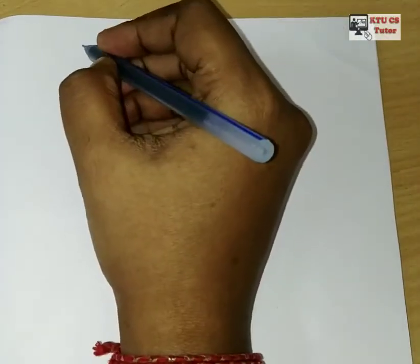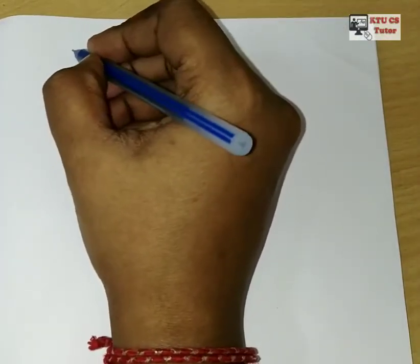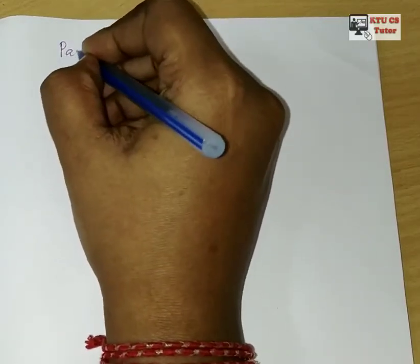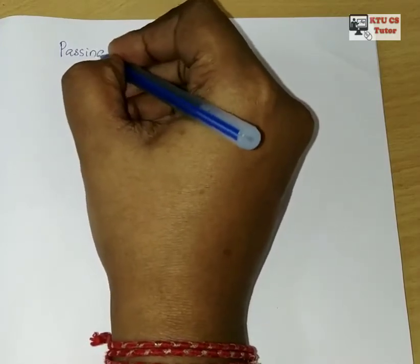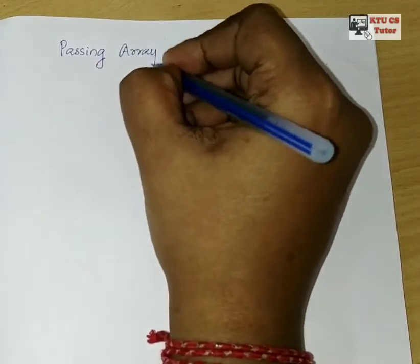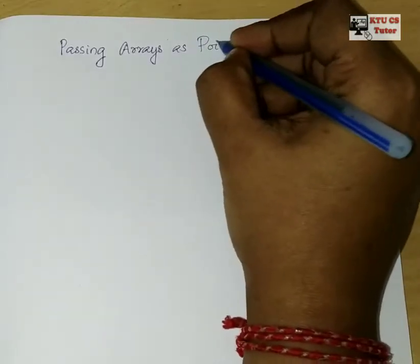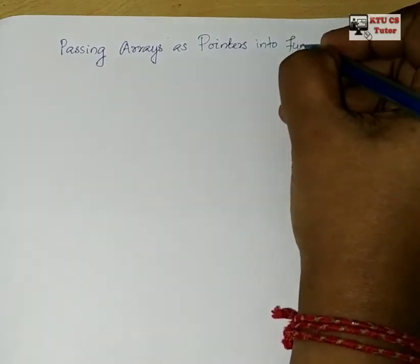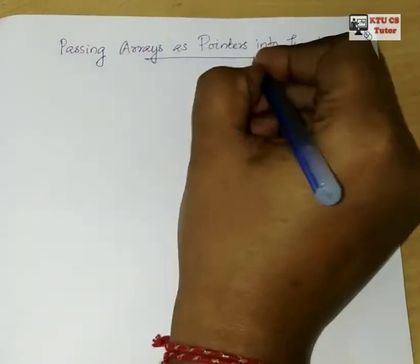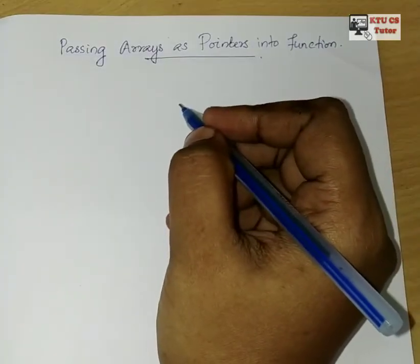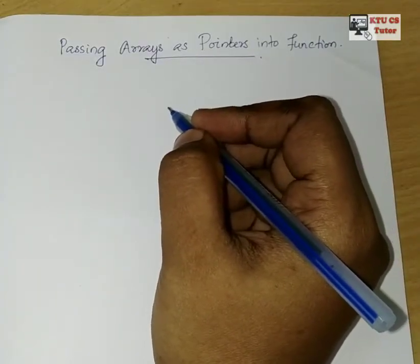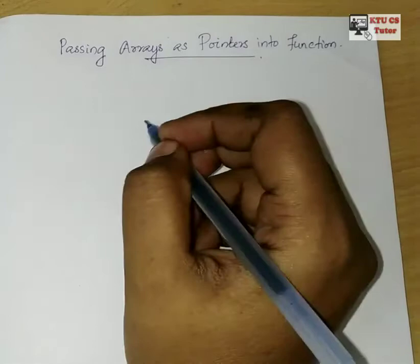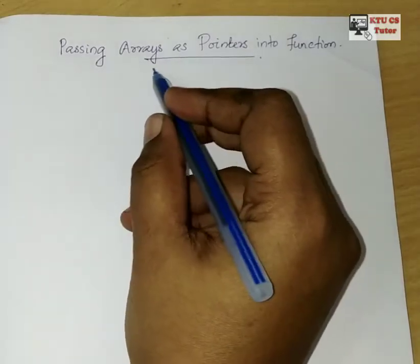In this class, we are going to learn about how to pass an array as pointers to a function. So, passing arrays as pointers into a function. Already we have seen how to pass arrays into a function as such. In this particular case, we are going to see how to pass the arrays as pointers.